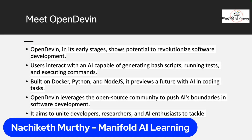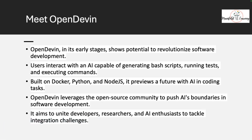Open Devin is currently in its early stages but shows the potential to revolutionize software development. Users can interact with this AI, which is capable of generating bash scripts, running tests, and executing commands. Open Devin is built on Docker, Python, and Node.js — so you need those installed. It leverages the open source community and aims to unite developers, researchers, and AI enthusiasts to tackle integration challenges.